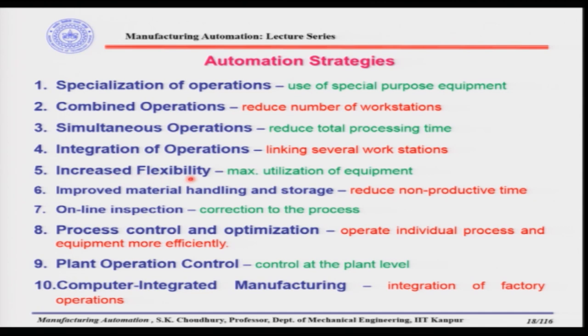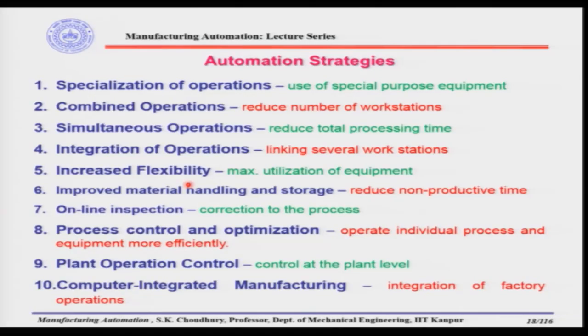The next point is increased flexibility — equipment is maximally utilized, meaning one machine can be used for producing different types of parts. For example, a standard turning machine can only perform turning, not milling. Whereas with an NC or CNC machine, many such operations can be performed together in one machine. This increases flexibility and machine utilization.